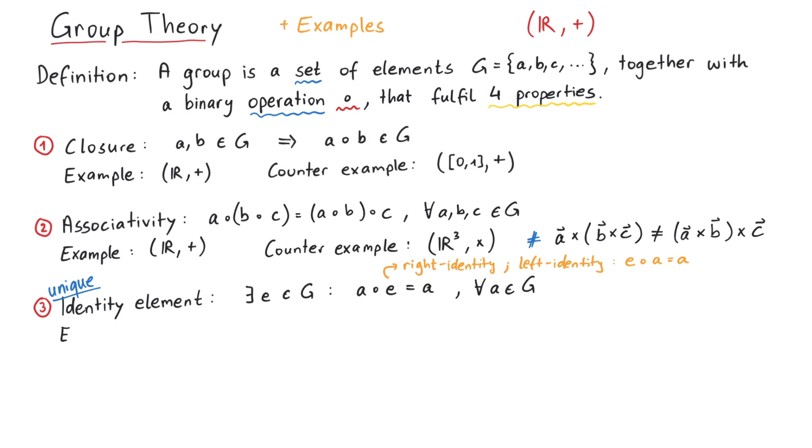To give you an example of an identity element, let's take the set of whole numbers Z, together with multiplication. In this case, the identity element is 1, since we can always multiply any number with 1, and it stays the same. And since 1 is an element of Z, this might be a group. For a counter example, consider R plus. For addition, the identity element is 0, but 0 is not in R plus, therefore this cannot be a group.